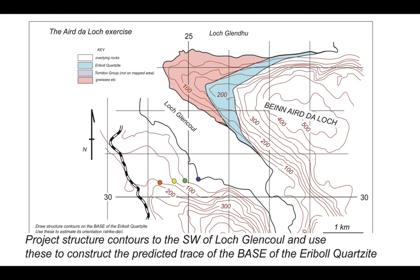We can identify four points along our geological boundary and draw it in. Further south, the topography swings to a north-south orientation, so the boundary curves accordingly. That is our prediction of the trace of the base of the Arable Quartzite in the unmapped area. We can color in the unit and use this predicted boundary to target our next fieldwork — going into the field to test whether we can map the boundary in the location predicted by the structure contour method.